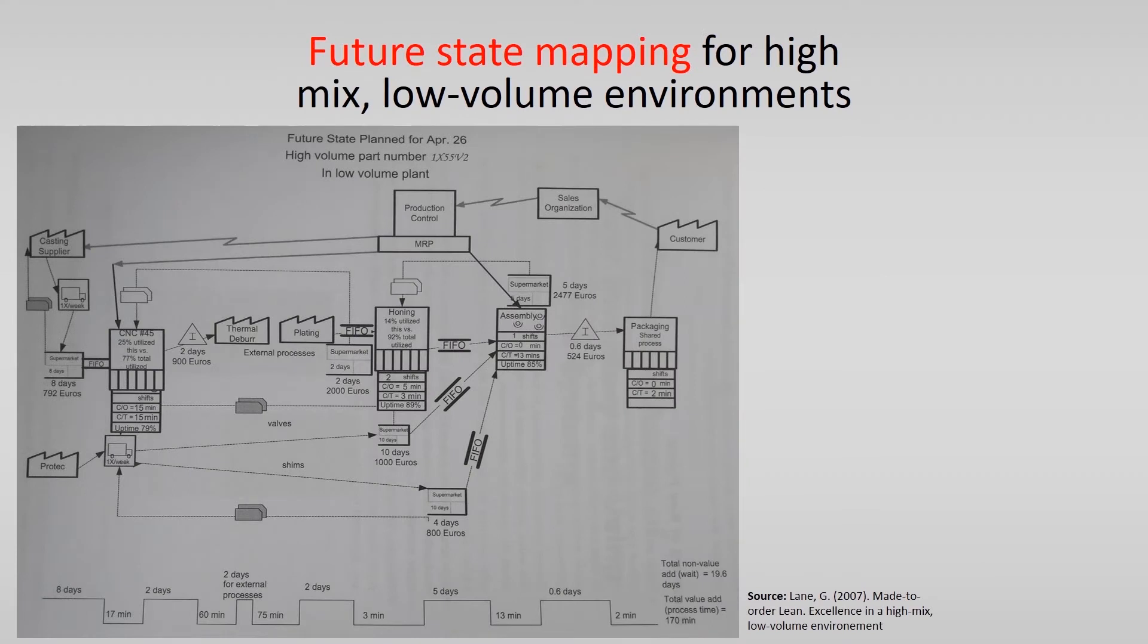Now we go to future state mapping for high-mix, low-volume environments. Here you see the future state map that is given in the book of Greg Lane. You see a high-volume part number in a low-volume plant. We won't go through this example in detail, therefore you should look into the book. But there are some things that are worth mentioning.